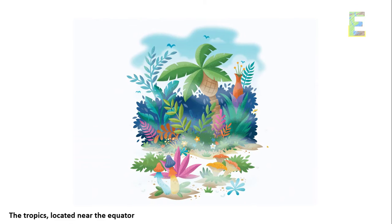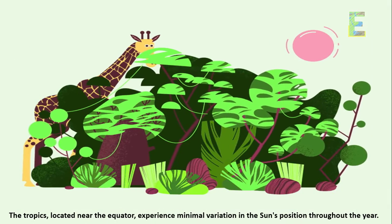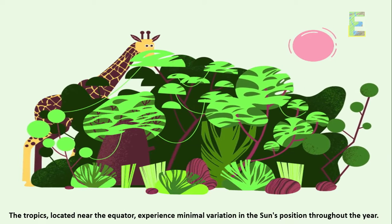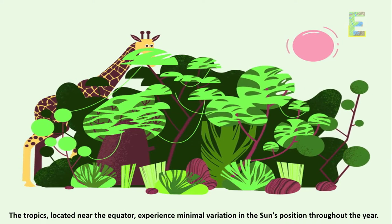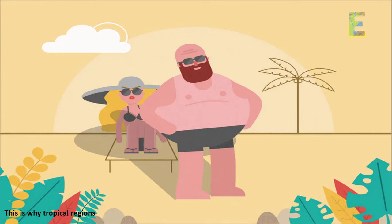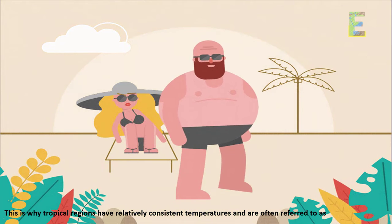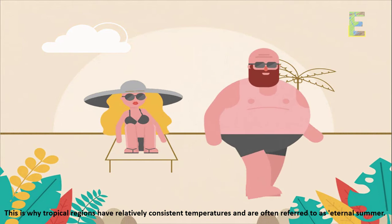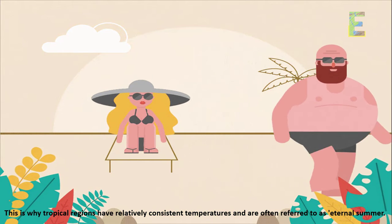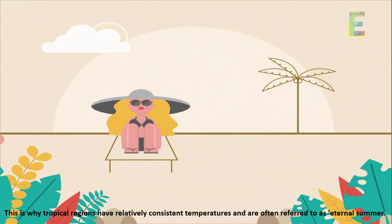The tropics, located near the equator, experience minimal variation in the sun's position throughout the year. This is why tropical regions have relatively consistent temperatures and are often referred to as eternal summer.